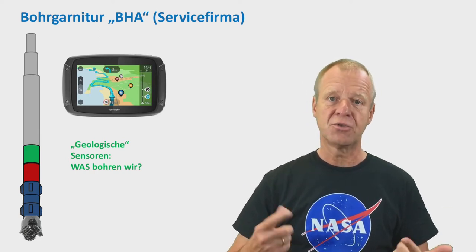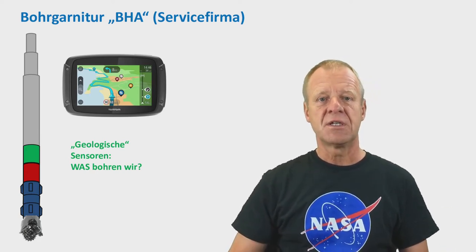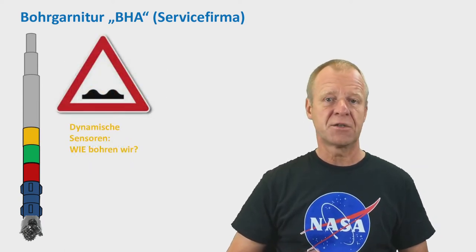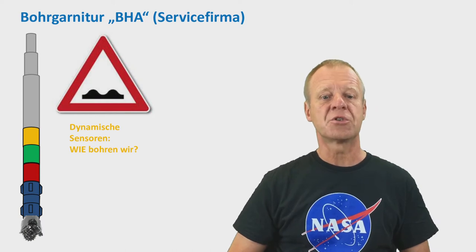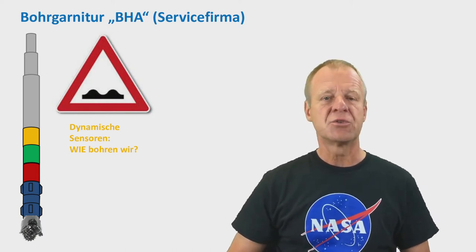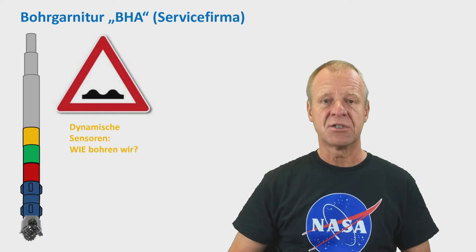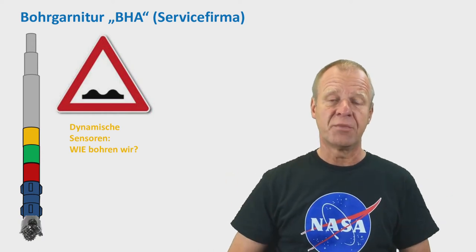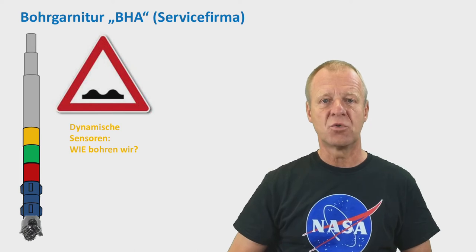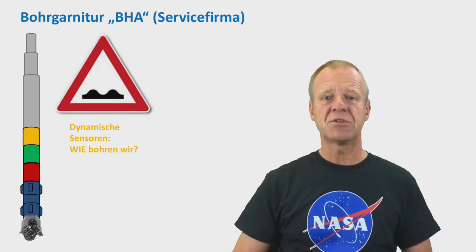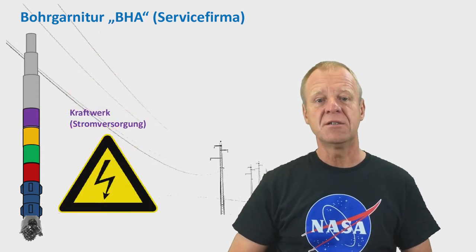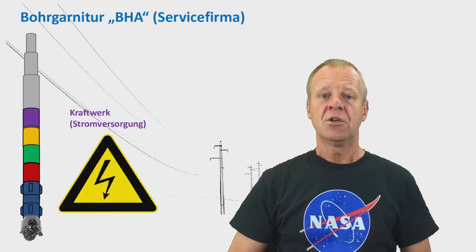We also have to prevent damage to the drilling rigs and equipment, so we have sensors that tell us how much vibrations and shocks we are experiencing during drilling operations. All of these sensors and devices work with electricity, but we don't have several kilometers of cable in the hole. So we generate electricity via small, mud-driven power plants in the drill string — we use the energy of the flowing mud to generate electricity.